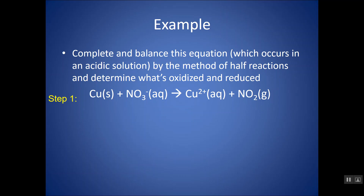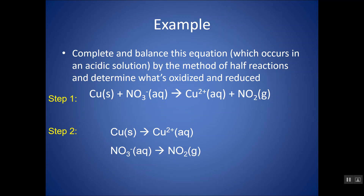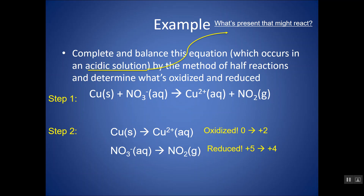Step one is done. Step two is to split this into two half reactions: copper turning into Cu²⁺ on top, and NO3⁻ turning into NO2 on the bottom. The example tells us this is occurring in an acidic solution. In an acidic aqueous solution, H⁺ must be present, and water (H2O) must also be present — so we're going to start using these things to balance the reaction.